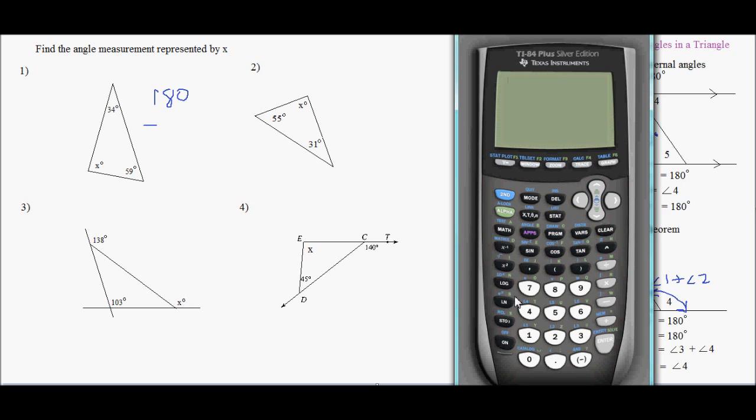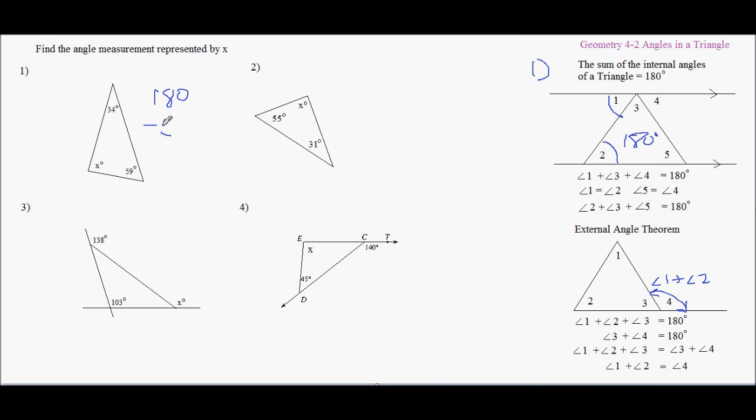And then I add these two up. So if I add up 34 plus 59, I subtract that from 180. That's my answer.